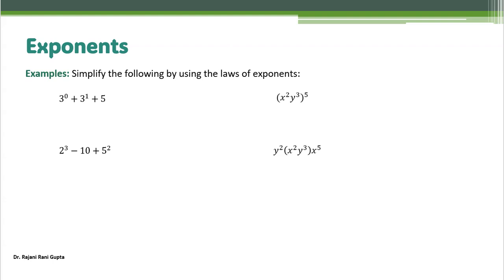Let's quickly solve some questions. First example: 3 power 0 plus 3 power 1 plus 5. Any number power 0 is 1; 3 power 1 means 3 multiplied once, so it's 3; 5 stays the same. So you get 1 plus 3 plus 5, which equals 9.